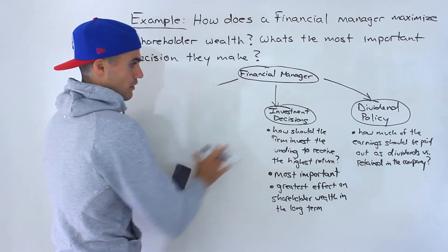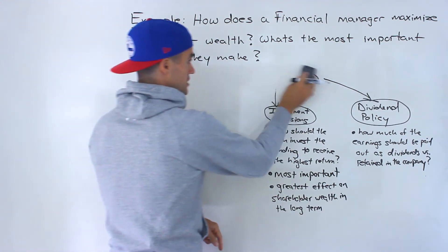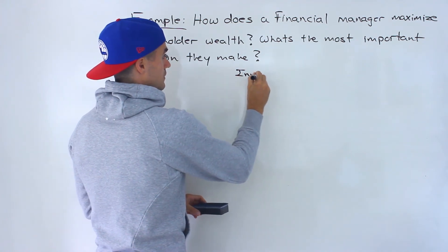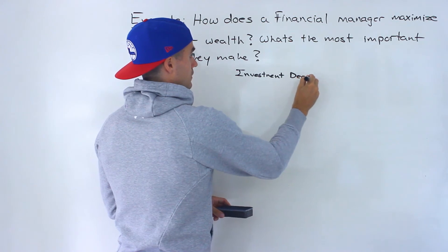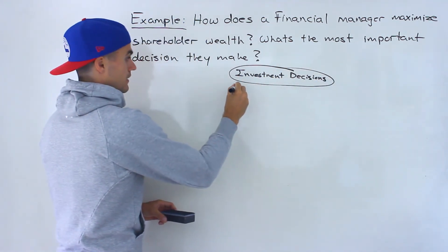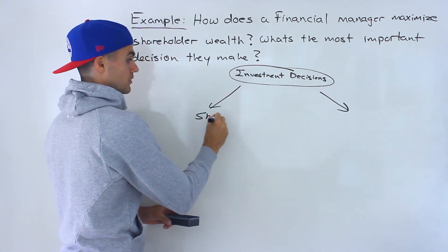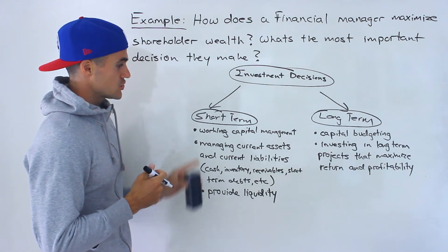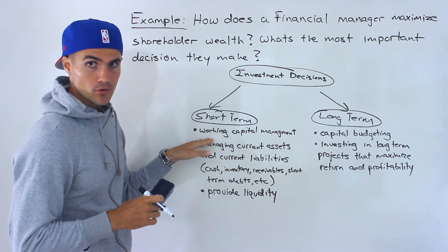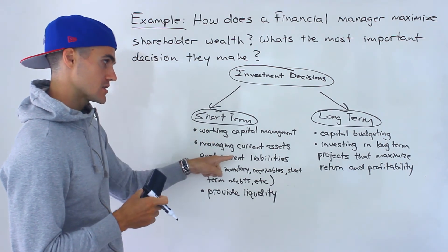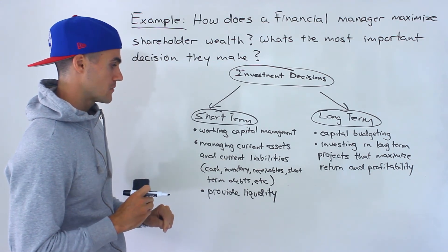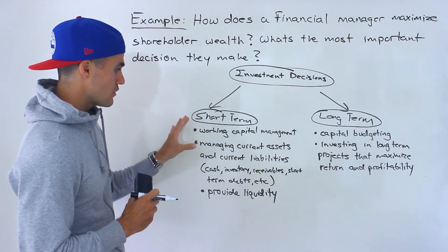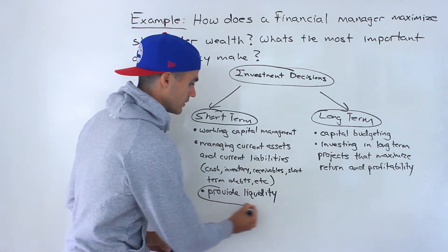To expand on this a bit more, a manager looks at investment decisions from two perspectives: the short term and the long term. Investment decisions made in the short term are more so for working capital management — managing net working capital, which is current assets and current liabilities. So stuff like cash, inventory, receivables, short-term debts, and accounts payable. The goal for short-term investment decisions is to provide liquidity for the firm, to meet interest payments, short-term debts, and things like inventory turnover.